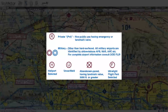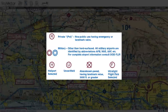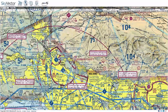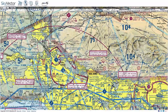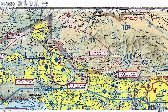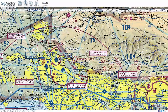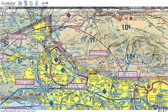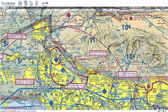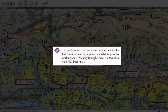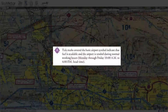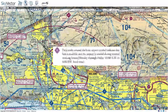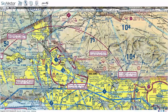Helipads and other airport types are also represented. In normal operations you're probably not going to need to know about tick marks around the basic airport symbol, which indicate that fuel is available — but you'll need to know it for the test.